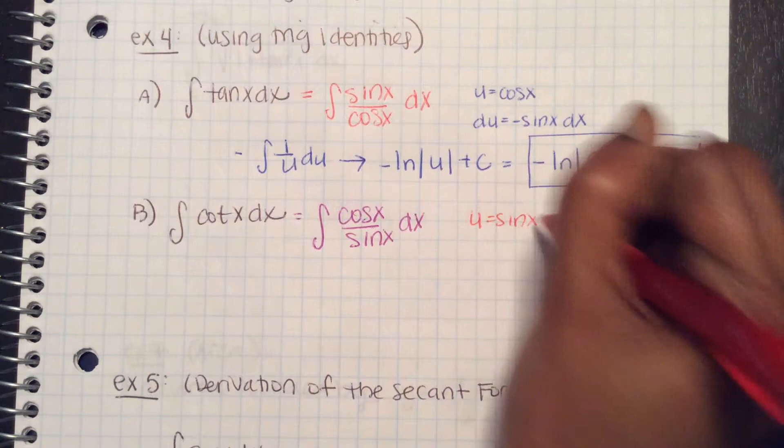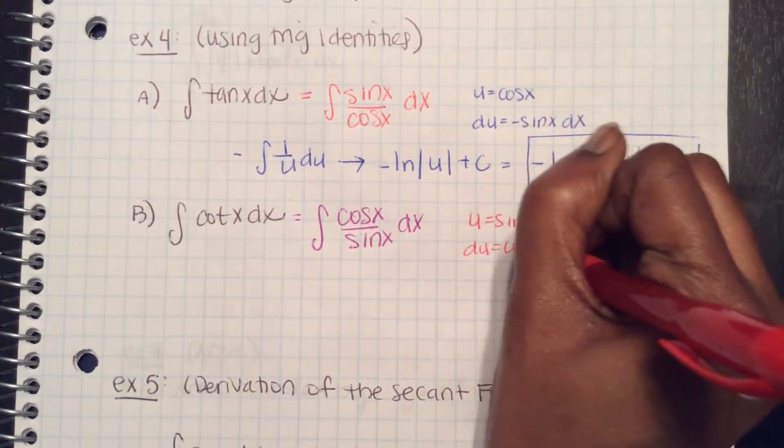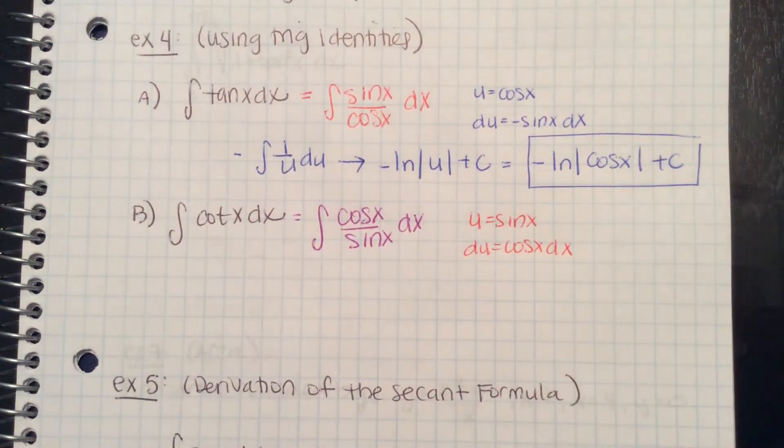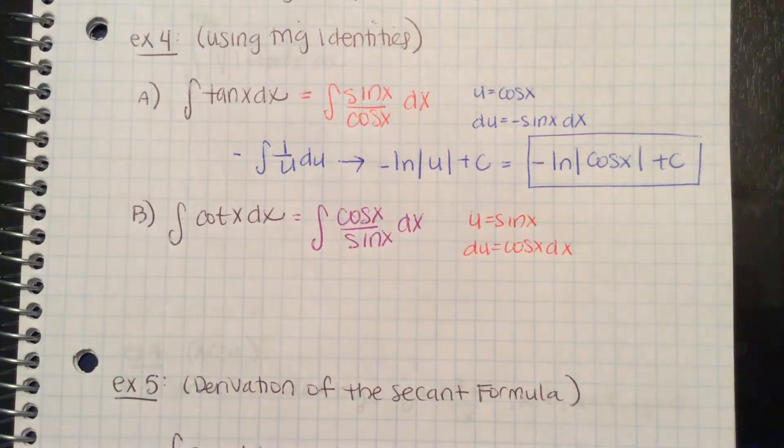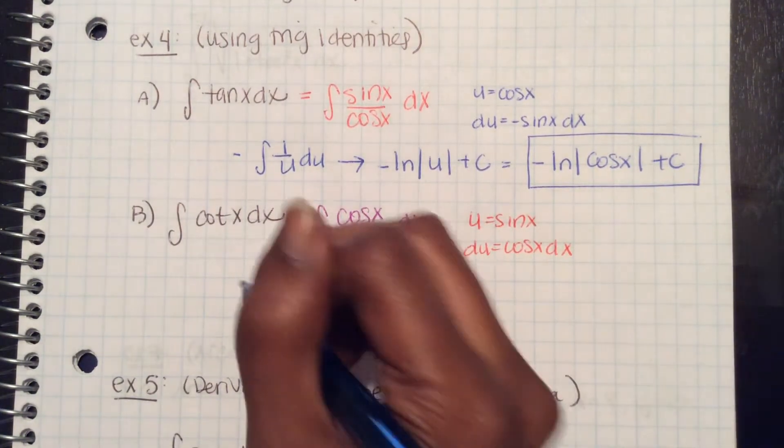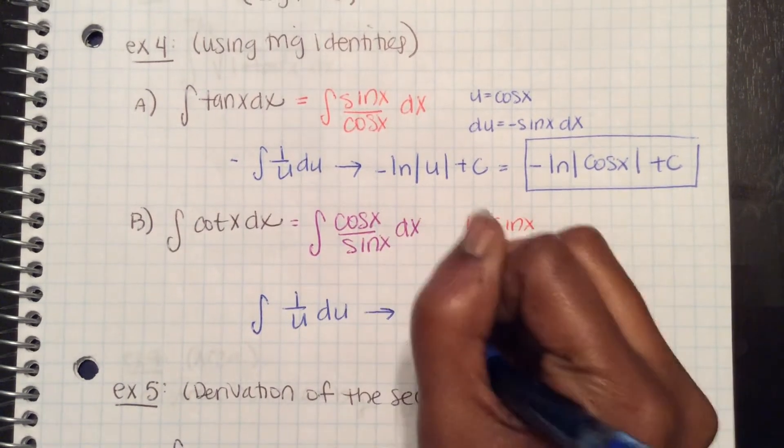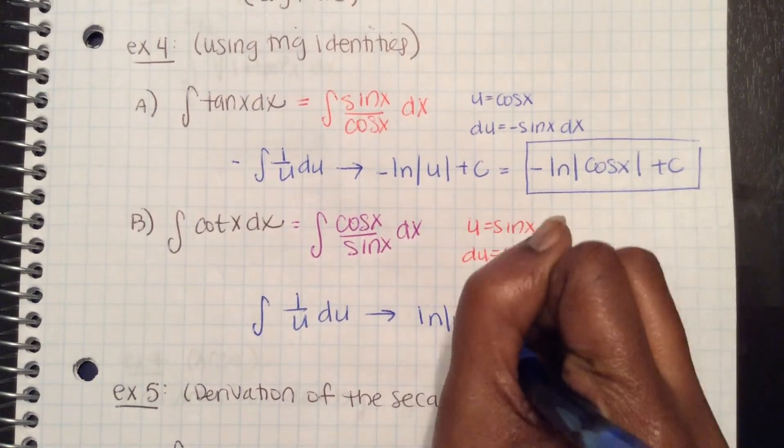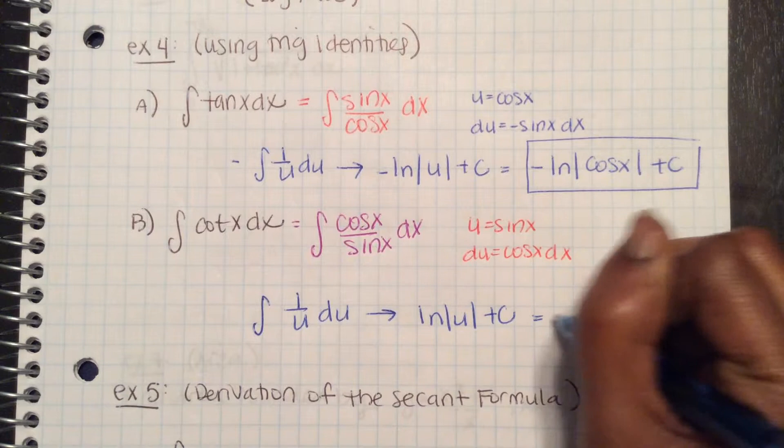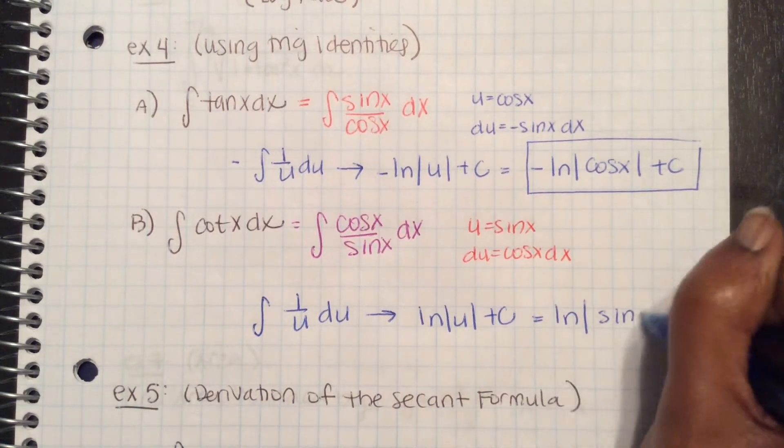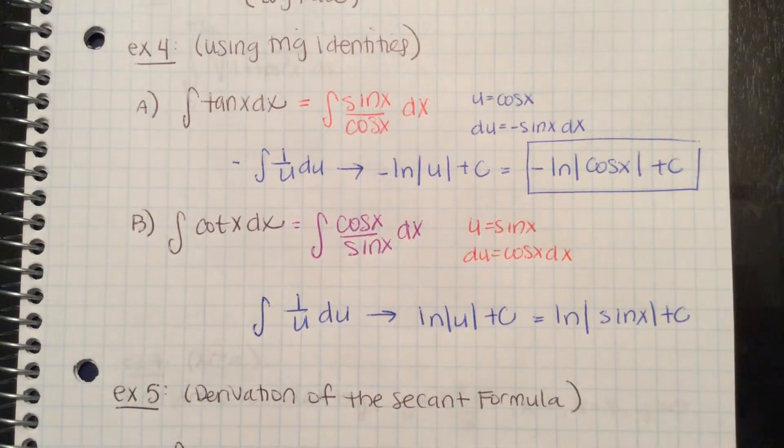du is cosine x dx. So this becomes the integral of 1 over u du, which is ln of u plus c. So it's ln absolute value of sine x plus c.